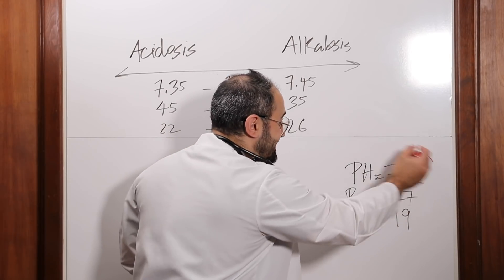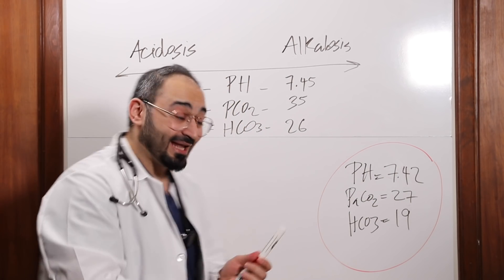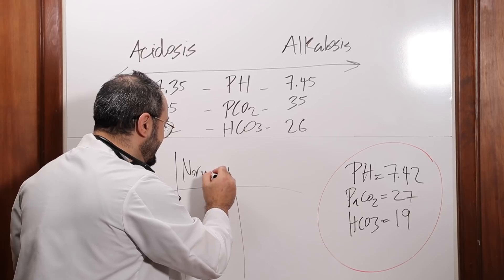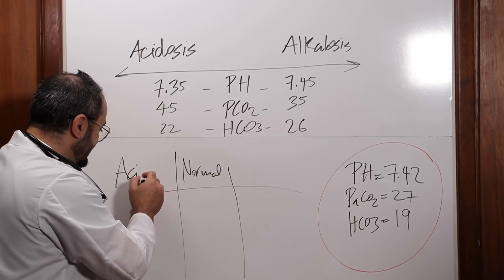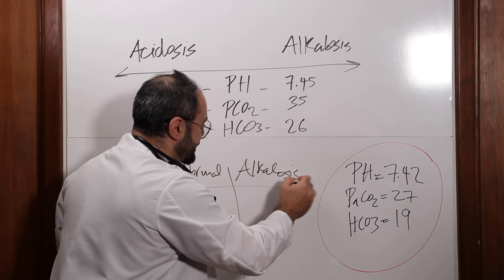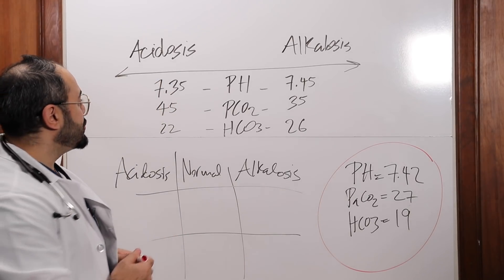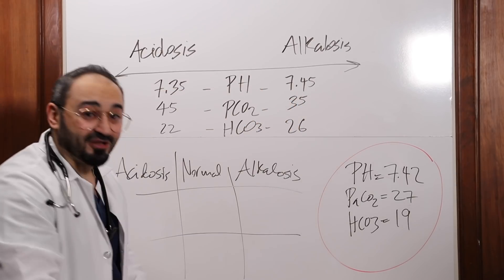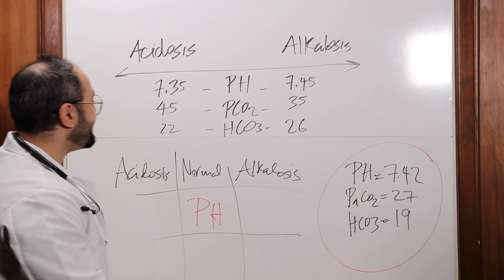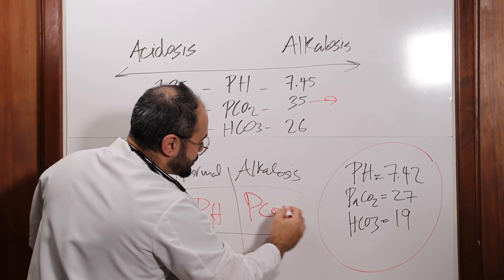So I put another example for y'all. And now this example, we're gonna discuss it the same way we discussed the other example. So let's see. We're gonna draw the grid the same way we drew the grid the last time. Here, it is normal. Acidotic. And here, alkalosis. So there's another grid. So the pH, it's 7.42. Where does that fit? Oh, it fits in the middle. That's normal. So I'm gonna put pH right here. What about PaCO2? It's 27. So it's right there. So it's alkalosis. I'm gonna put PCO2 right here.